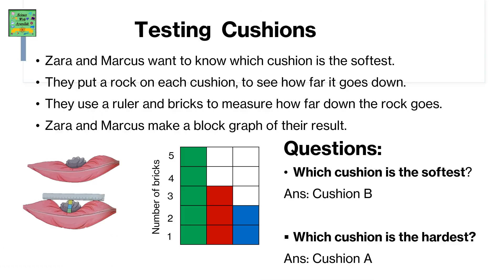Zara and Marcus want to know which cushion is the softest. They put a rock on each cushion to see how far it goes down. They use a ruler and bricks to measure how far down the rock goes.